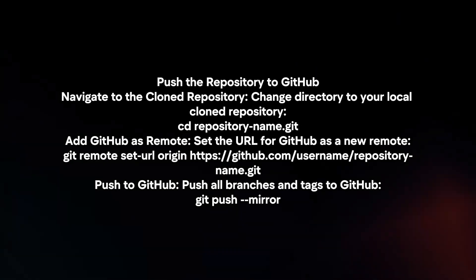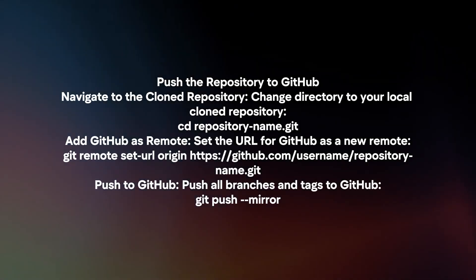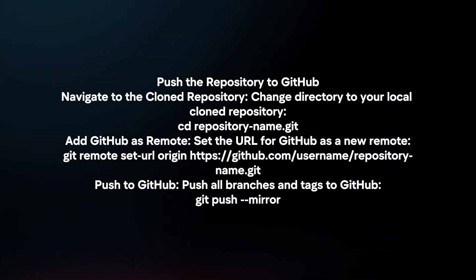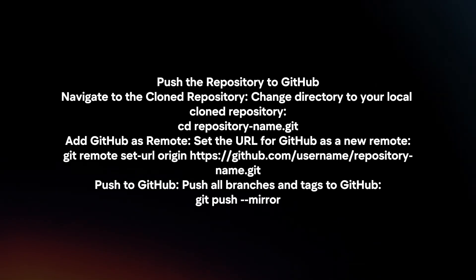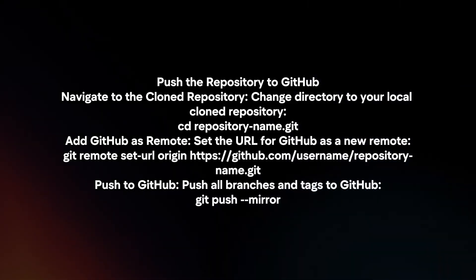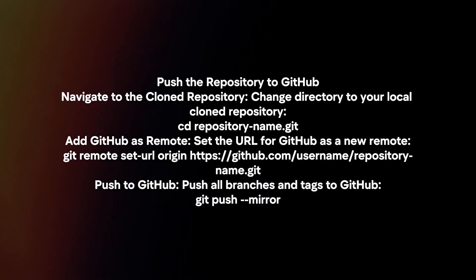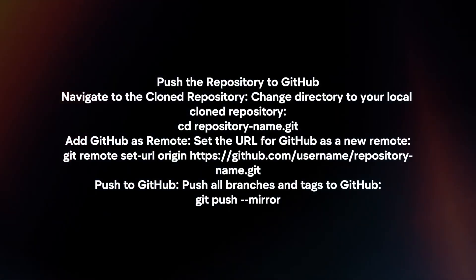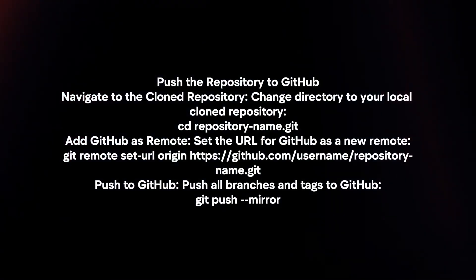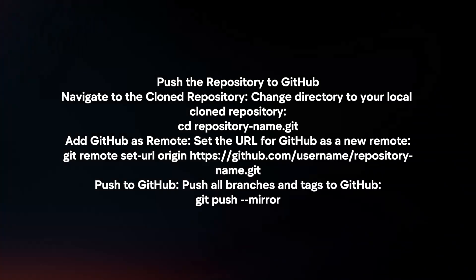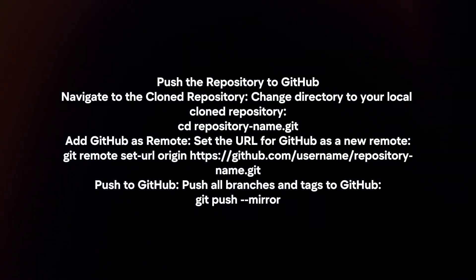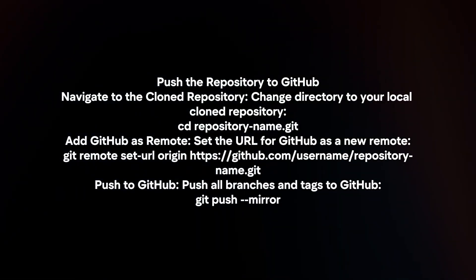Push the repository to GitHub. Navigate to the cloned repository and change the directory to your local cloned repository. Add GitHub as a remote by setting the URL for GitHub as a new remote. Then push all branches and tags to GitHub.